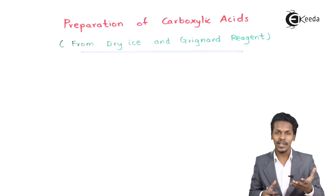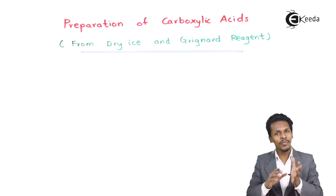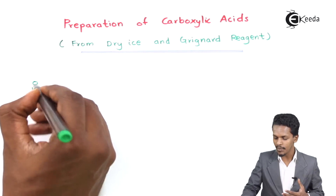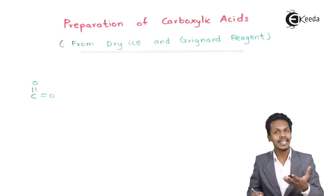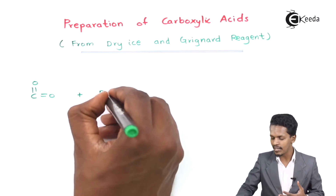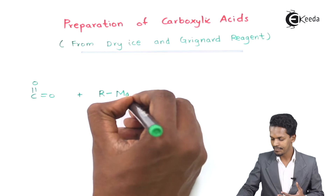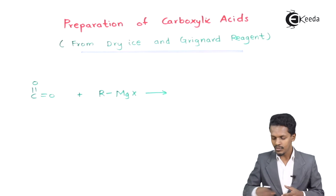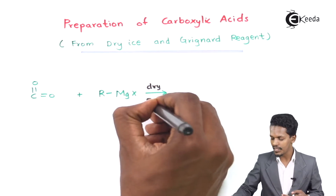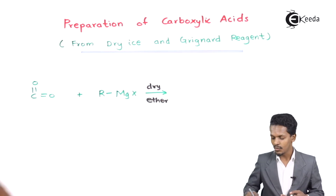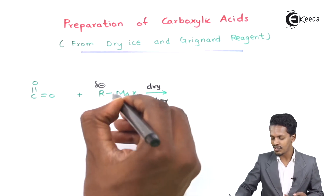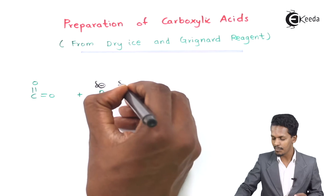Dry ice is nothing but carbon dioxide in solid form. So I am going to represent the general reaction: if you consider dry ice, that is CO2, and it reacts with R-MgX, that is the Grignard reagent. This reaction occurs in the presence of dry ether. The alkyl group R has a partial negative charge while MgX has a partial positive charge.